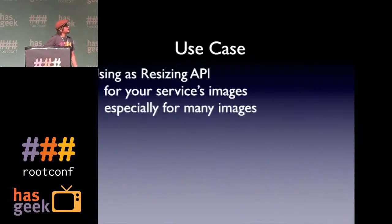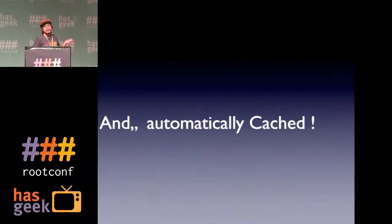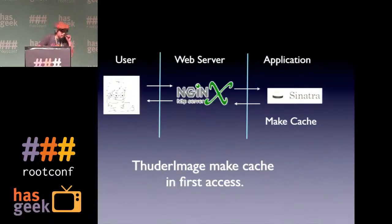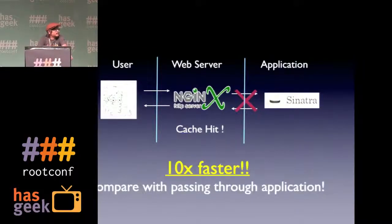The use case is for your service's images, especially many images like thumbnails and smartphone or mobile views. A key point is automatic cache, which means high performance. Usually this kind of thing is done at the application level, but in this case it's done by the web server, not by the application — it means file cache. It is 10 times faster compared with the application approach.